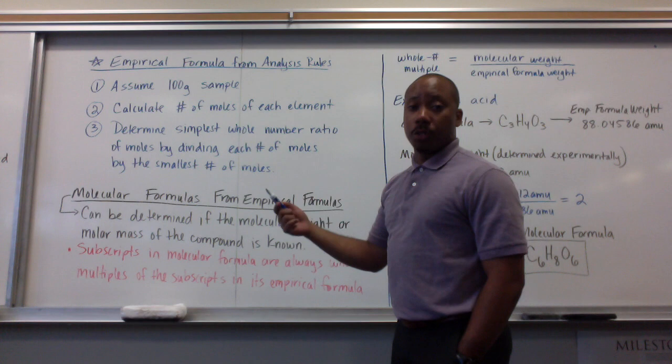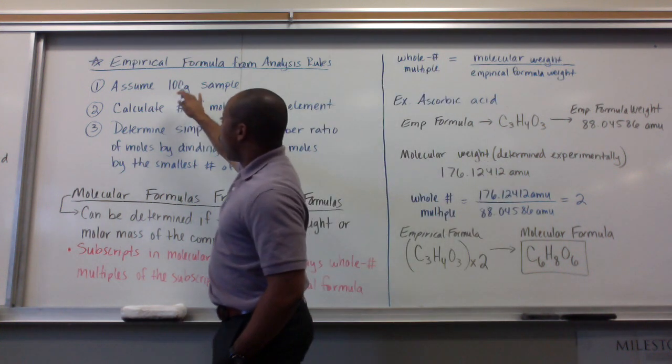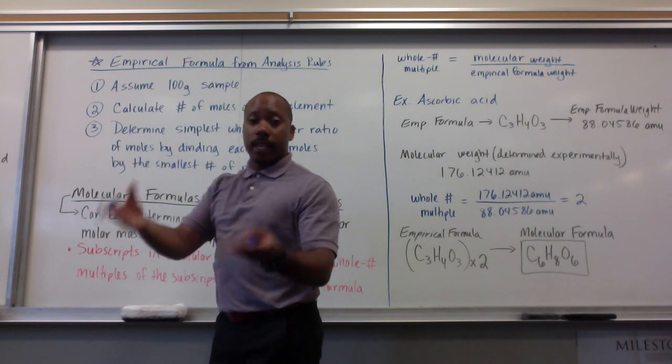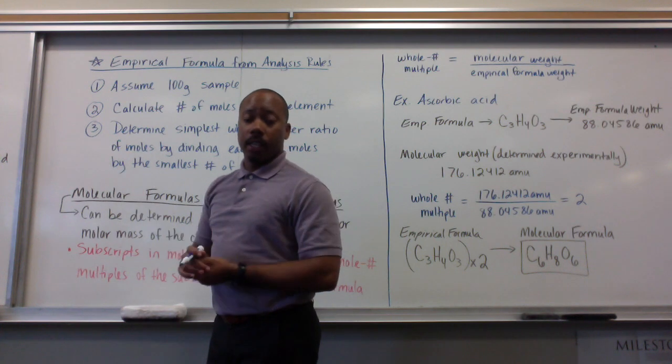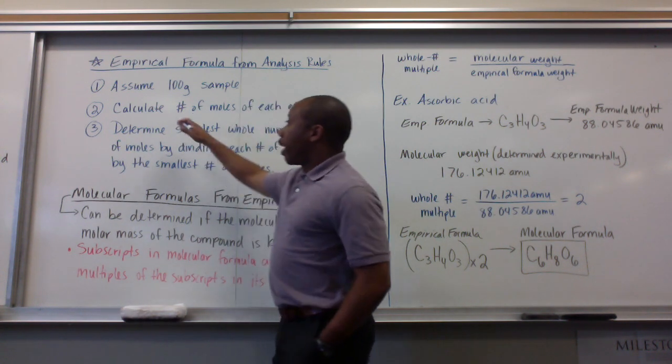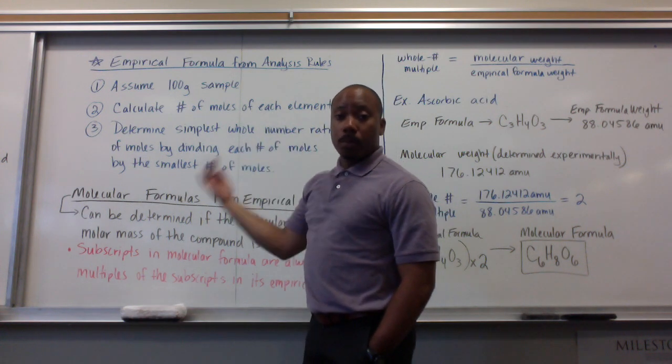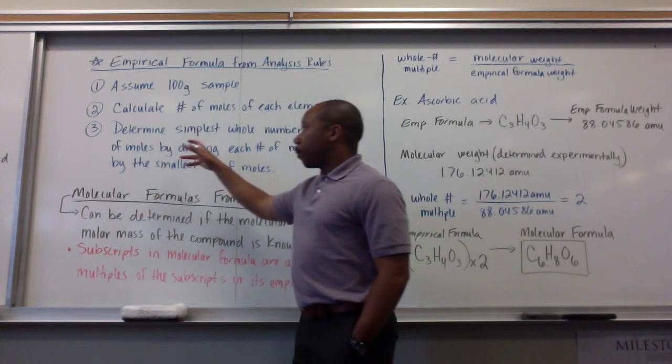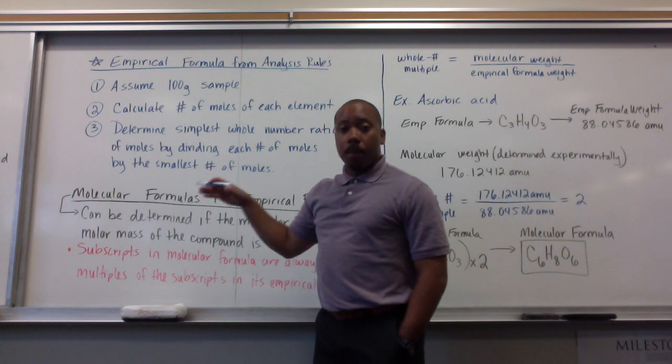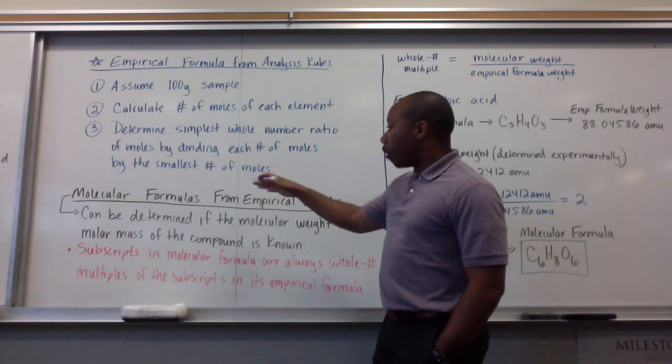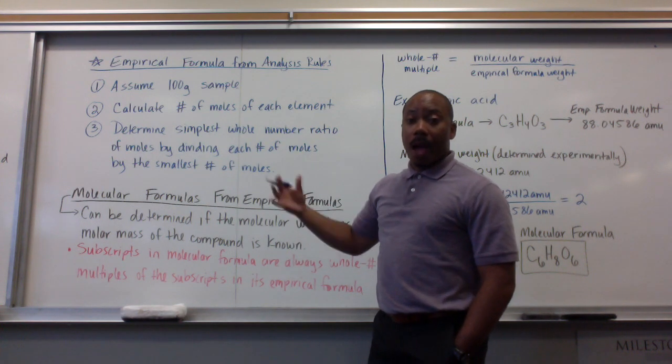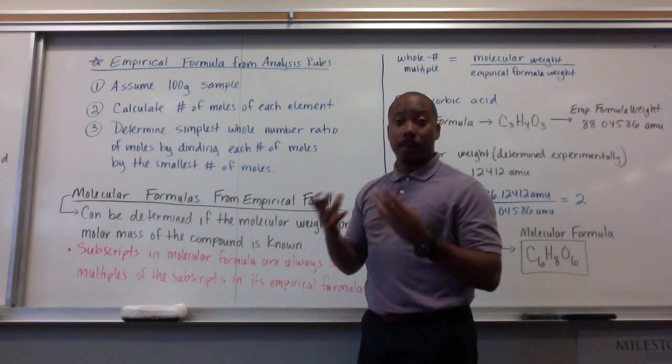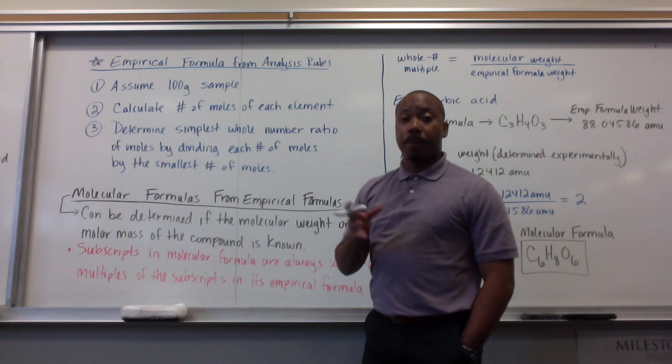Rules in doing this in the future. First thing, you assume a 100-gram sample in every single problem, so that your percent compositions can be directly translated into masses, as we did in the original problem. Second thing, you calculate your number of moles of each element. Using the molar mass, you go from grams to moles. Third, you determine the simplest whole number ratio of moles by dividing each number of moles by the smallest number of moles. And that will give you your whole number ratios, meaning the subscripts for each particular element in your empirical formula.